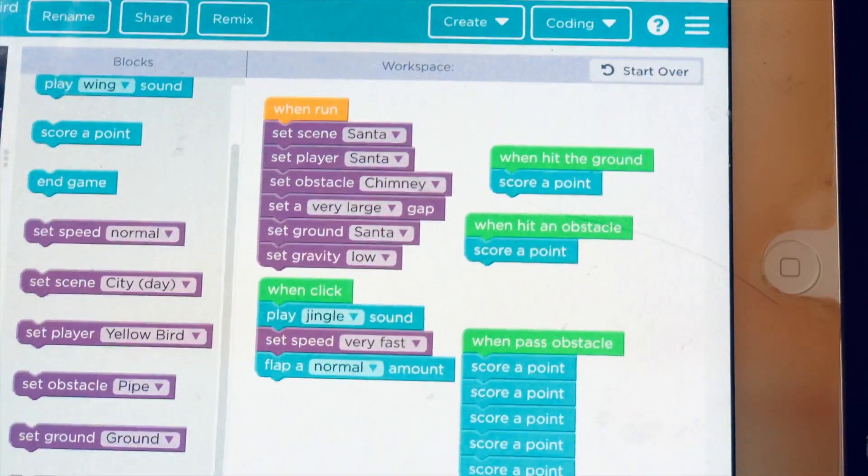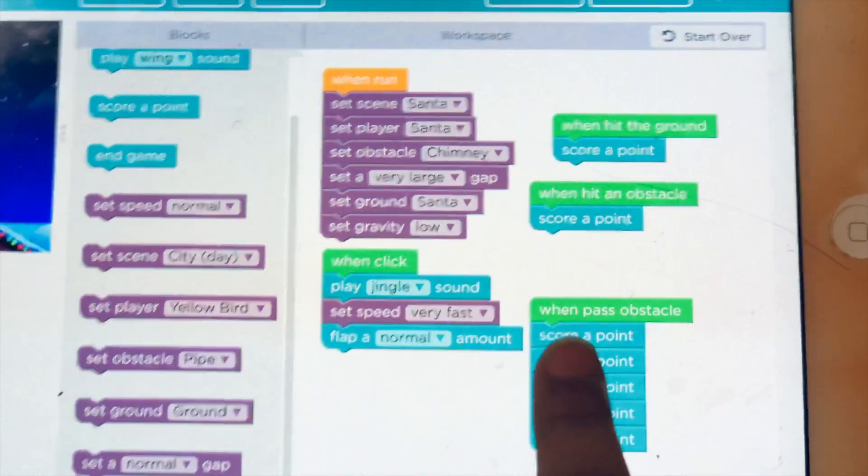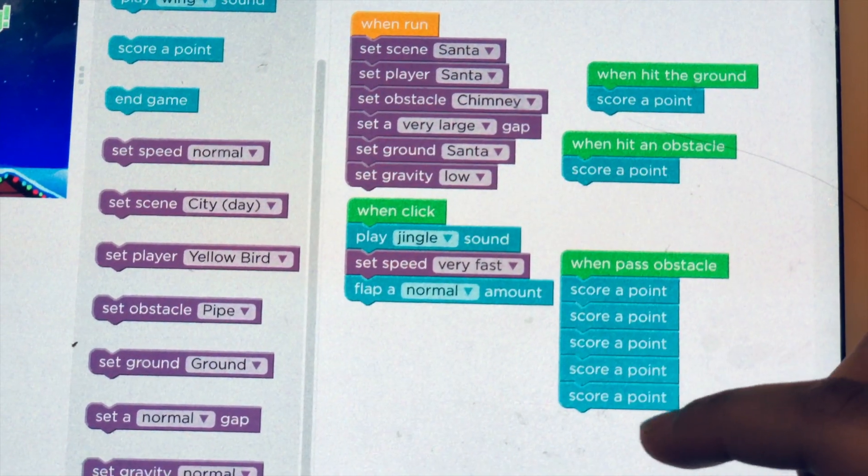There are no repeat loops, so in order to set how many points you want, you have to put that many blocks. Like I put here: one, two, three, four, five.